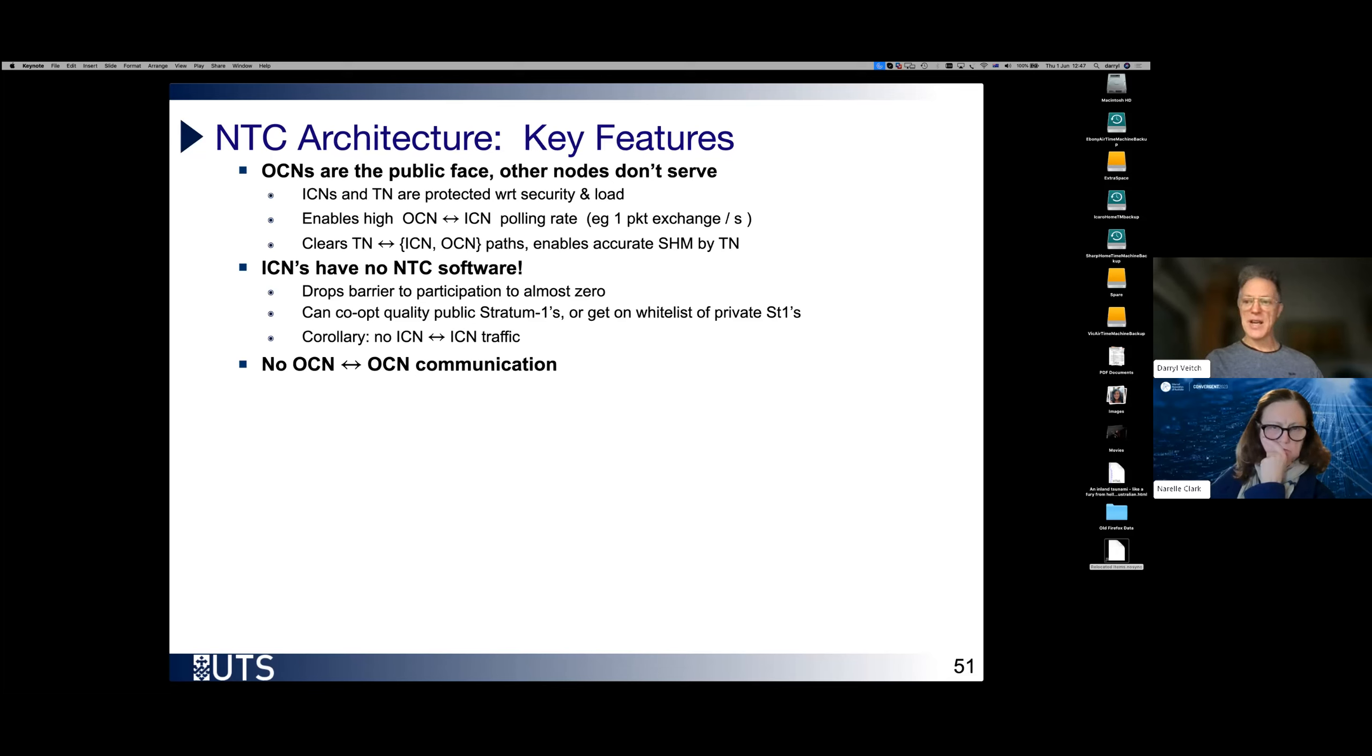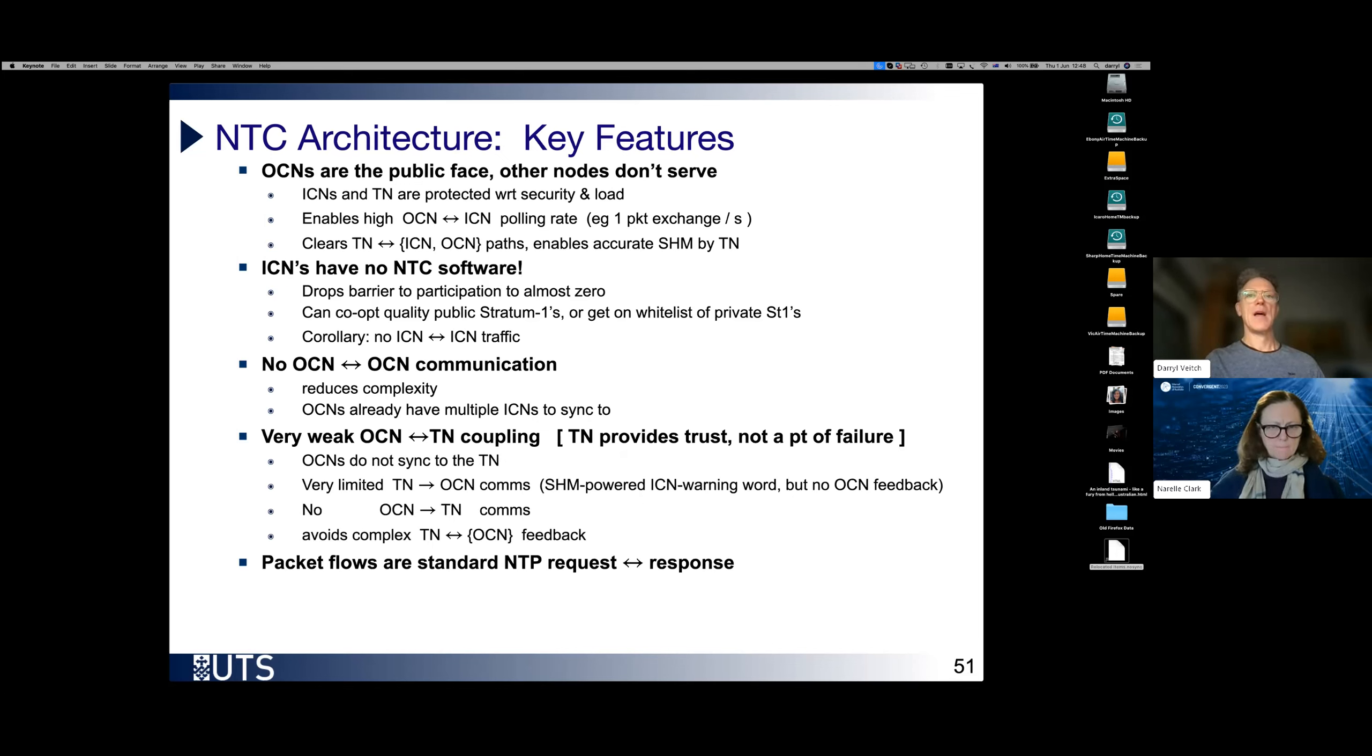No OCN to OCN communication. We want to keep it simple to reduce complexity and recoupling between the trust node and those outer core nodes. The trust node is meant to provide trust and internal auditing. It's not meant to be part of a distributed system, which would then become a single point of failure. And finally, the packet flows are standard NTP request responses. We don't have to invent a new protocol, which would be very complicated. We would have all sorts of new attack surfaces that would need to be examined.